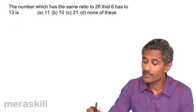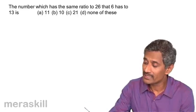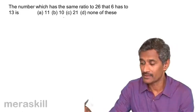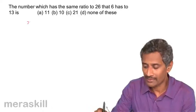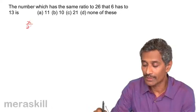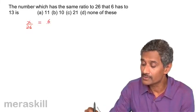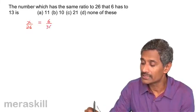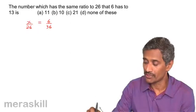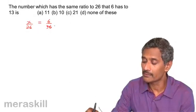The number which has the same ratio to 26 that 6 has to 13. That means there is some number X, its ratio to 26 is the same as the ratio of 6 to 13. Oh, I'm sorry, it's 6 by 13.